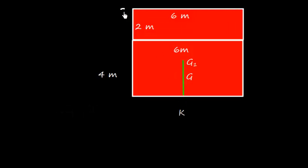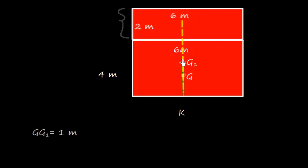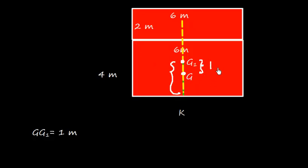Now, we add a weight with dimensions 6 meters and 2 meters on top. So the G will shift towards the weight loaded — the shift will be upward. We need to calculate how this shift is going to be affected. The new total dimension is 4 plus 2 equals 6 meters, so the new geometrical center KG1 is 3 meters, and the shift GG1 will be 1 meter.